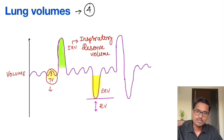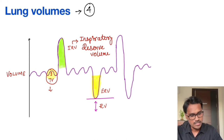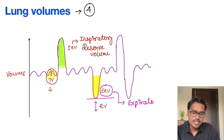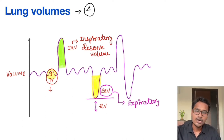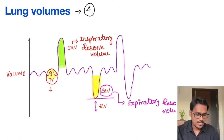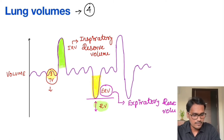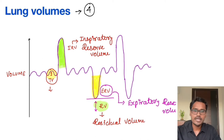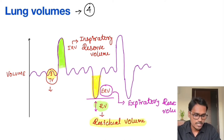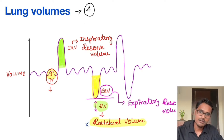After a few normal breaths, we ask the subject to expire out as much as possible. That volume is called expiratory reserve volume, or ERV — the extra amount of air that can be breathed out after quiet expiration. Then there is RV, residual volume. This is not recorded on this graph because this amount of air cannot be expelled from the lungs, so it is not measured by a typical spirometer. Residual volume is always present in the lung to prevent the collapse of the alveoli.